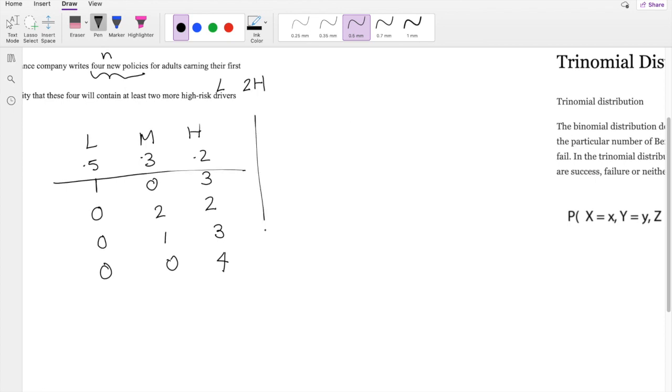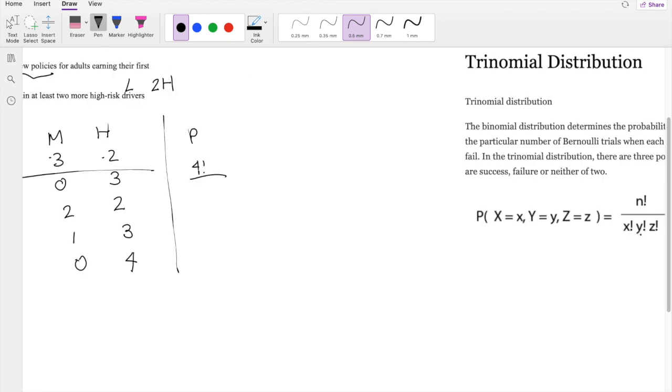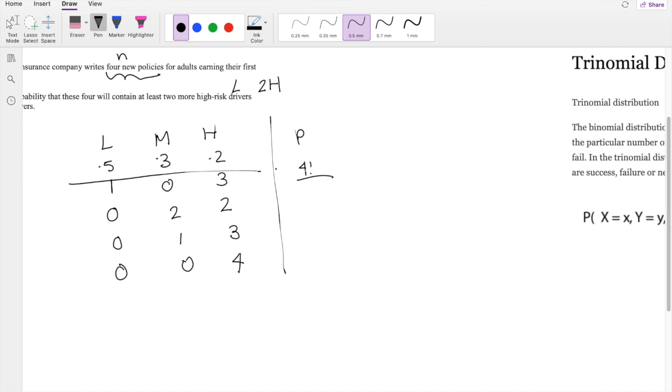So then by the definition, our sample size, which is four factorial, the probability will be four factorial over x factorial and y factorial. So that would be the number of trials, that would be three factorial times one factorial times the probability of 0.5 raised to the first power because there's only one low risk, times 0.3, wait, times the probability that there is high risk. Technically, it would be 0.3 raised to the 0 power and 0.2 raised to the 3 power.